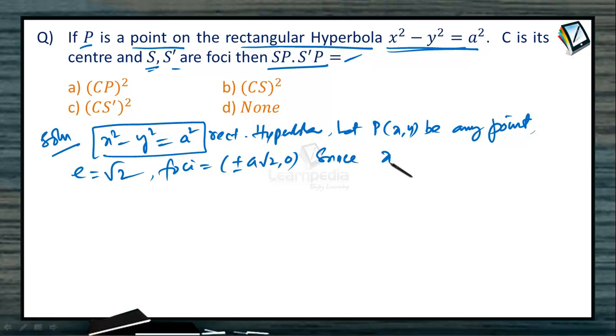Now since equation of directrices x is equal to ±a/√2, these are the directrices. Let us find SP is equal to e times the perpendicular distance of P on the directrix concerned.